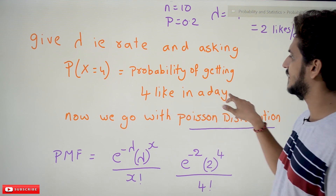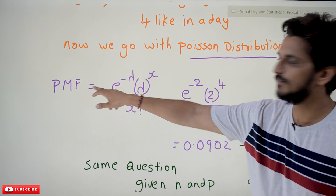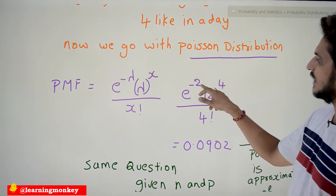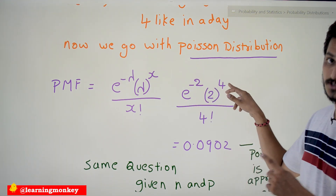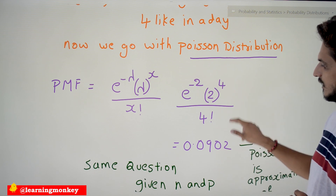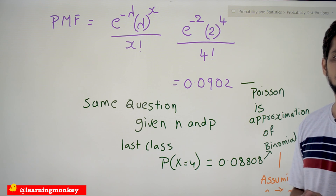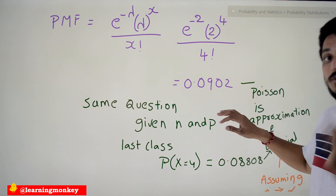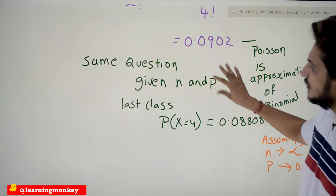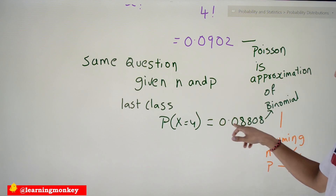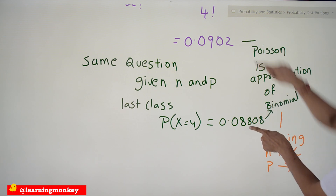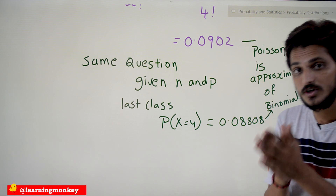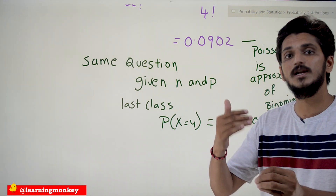Given lambda = 2 and asking for the probability of X equals 4 likes in a day, we use the Poisson probability mass function: P(X=x) = e^(−λ) × λ^x / x!. Substituting: e^(−2) × 2^4 / 4! gives 0.0902. Applying the same data with binomial distribution gave 0.08808 — approximately the same. That is why we say Poisson distribution is an approximation to binomial distribution.